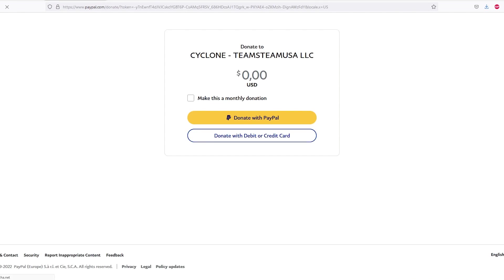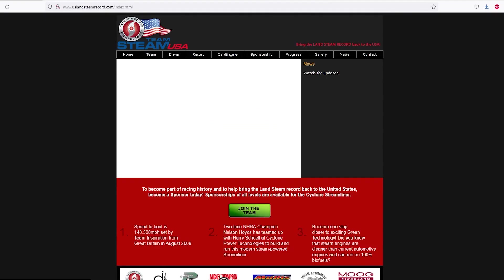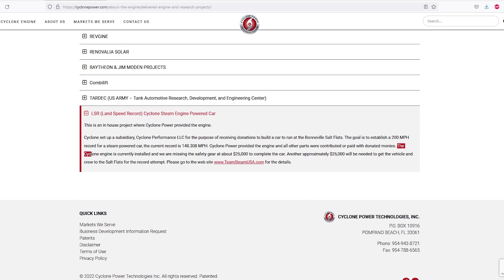On the homepage there is a join the team button where you can donate some of your own money to help them reach their goal. Now on Cyclone Power's main website they claim that the Cyclone engine is currently installed and that they are missing safety gear of about $25,000 to complete the car.